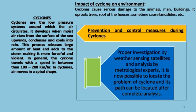For prevention and control during cyclones, the first measure is proper investigation by weather-sensing satellites and analysis by meteorological experts. This makes it possible to locate a cyclone and predict its path after complete analysis.